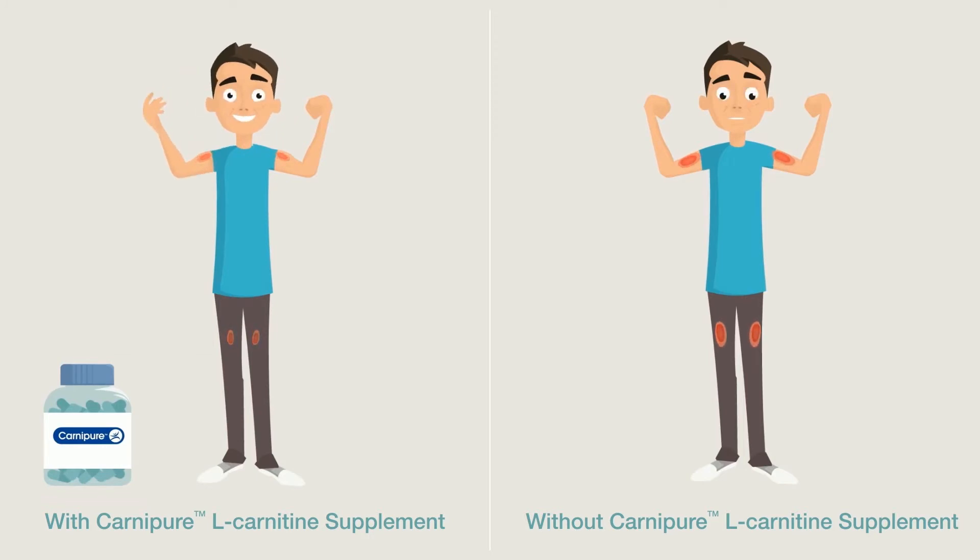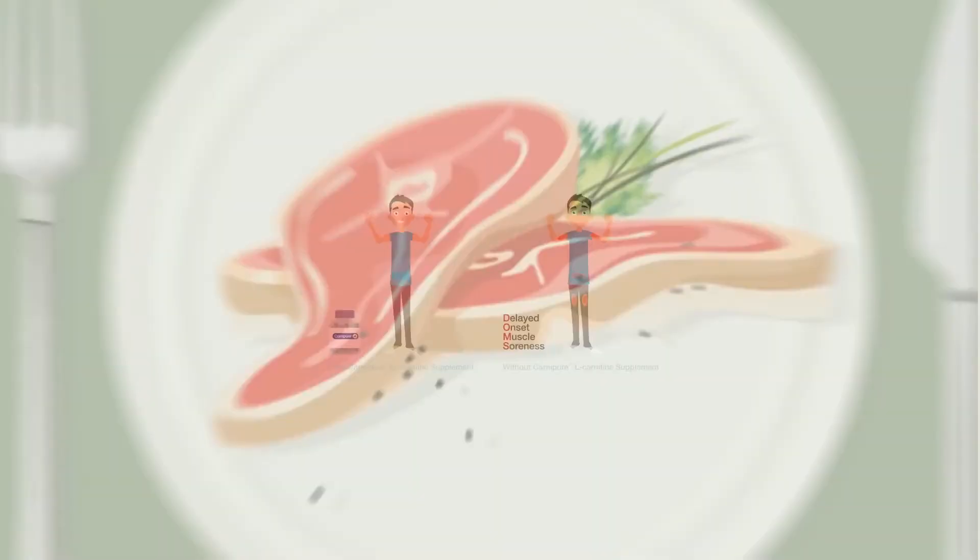Carnipur L-Carnitine has been shown to help prevent soreness after exercise, also known as DOMS, delayed onset muscle soreness.